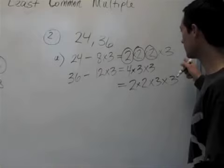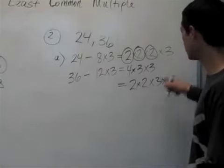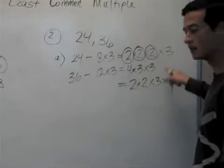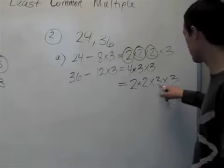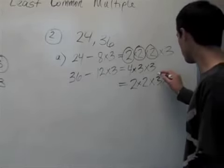Now we look at our other prime factorization numbers, and that's 3. There's one 3 here and two 3's here. So we choose the greatest number of them, and that's in the 36, and there's two of them.